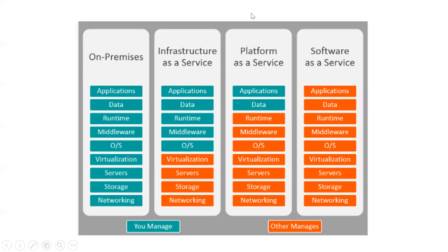This diagram shows the first column as on-premises devices, and the next three columns represent what cloud providers can offer: IaaS — Infrastructure as a Service, PaaS — Platform as a Service, and SaaS — Software as a Service.